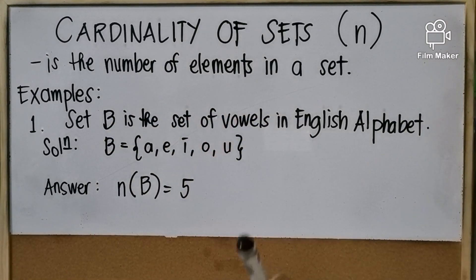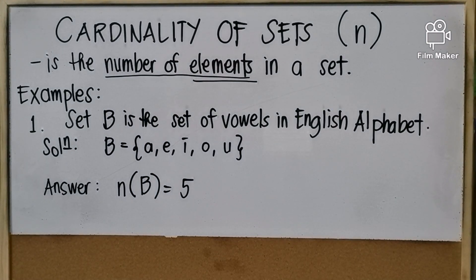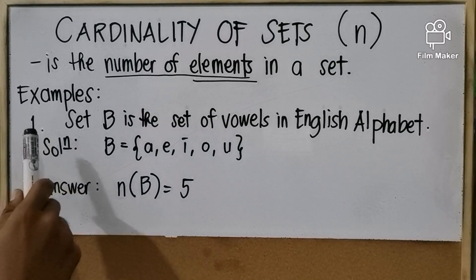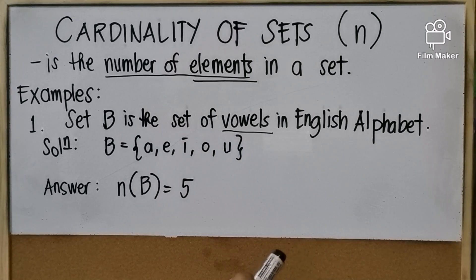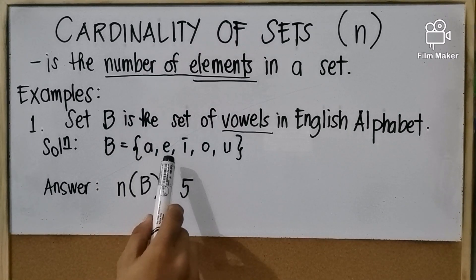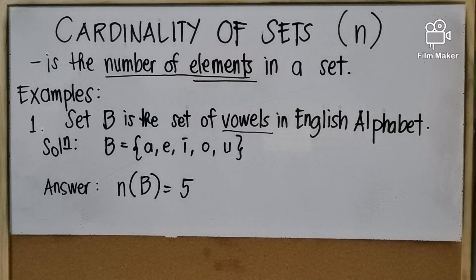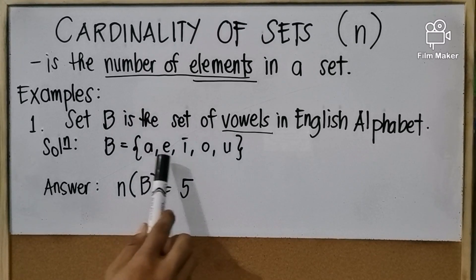Next we have cardinality of sets, denoted by the |·| symbol. Cardinality of a set is the number of elements in the set — we simply count the elements. For example, set B is the set of vowels in the English alphabet, so set B equals {A, E, I, O, U}. Therefore, the cardinality of set B is equal to 5, because there are 5 elements.